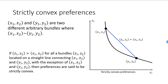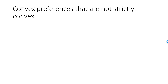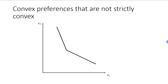If preferences are strictly convex, then they will also be convex, as this only requires bundles on the blue line to be weakly preferred to bundles on the indifference curve. Here is an example of preferences that are convex but not strictly convex. Looking at the indifference curve consisting of two line segments, which we concluded is consistent with convex preferences, we can see it is not consistent with strictly convex preferences. If we pick the X bundle and Y bundle on the same segment and draw a straight line between them, bundles on the blue line are not strictly preferred to bundles on the indifference curve — they are themselves on the indifference curve, only weakly preferred. Any indifference curve which has a straight line segment cannot be strictly convex.